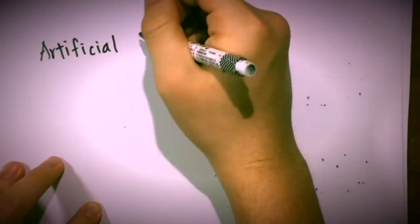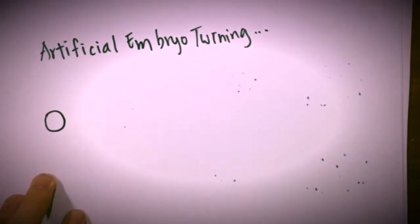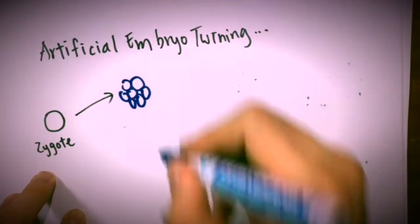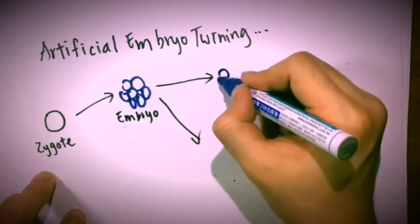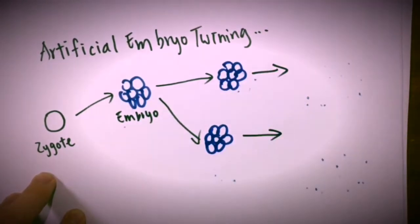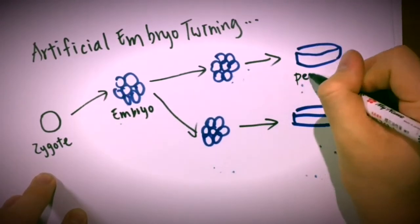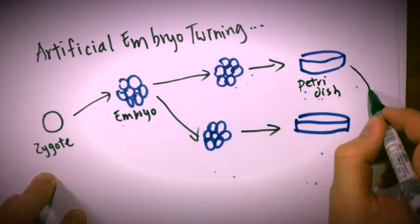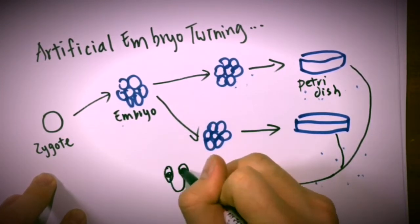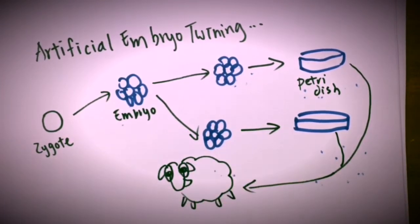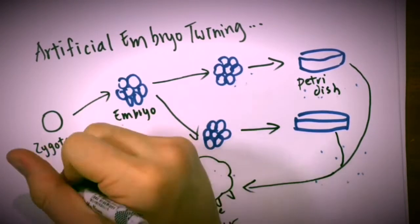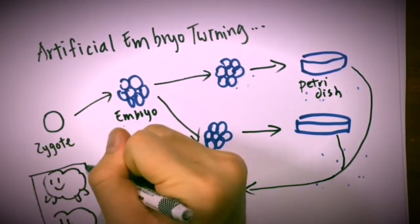It is time to introduce how artificial embryo twinning works. Same as before, we have a zygote that later becomes an embryo. The embryo is separated manually and put into a petri dish to grow. After enough growth, they are removed and put into a surrogate mother, which will then give birth to two identical clones.